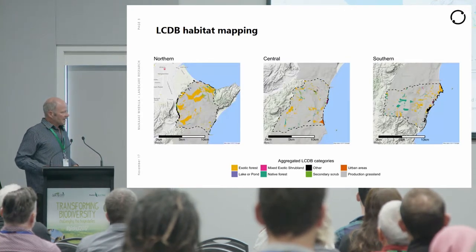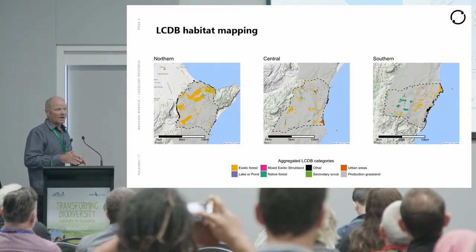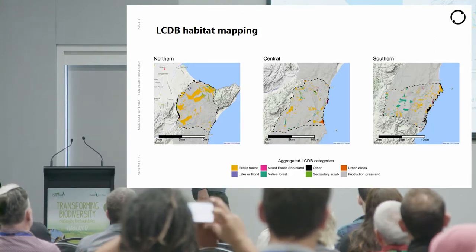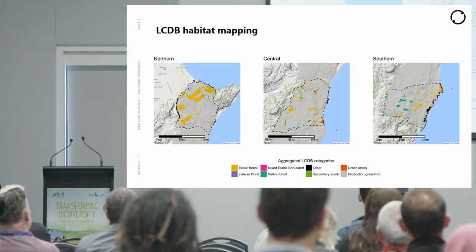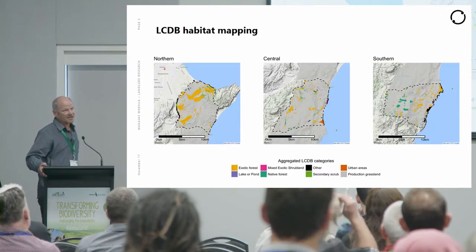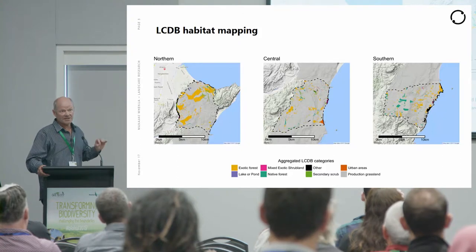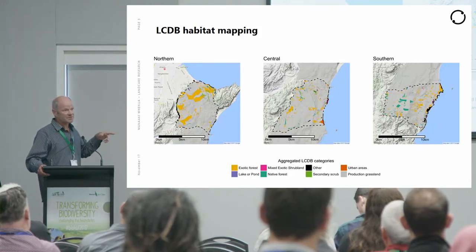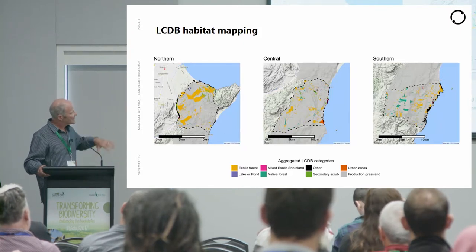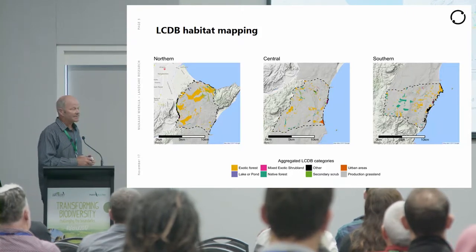Data from the Land Cover Database 4 covers the Cape to City footprint, split into top, middle, and bottom sections. In the north, there's a lot of pine forest that's about to be — or is currently being — cleared. In the middle, there's not quite so much exotic forest. Down the bottom is where most of the indigenous forest is. That's the land cover situation in Cape to City.